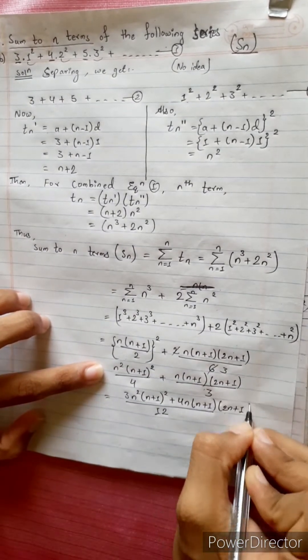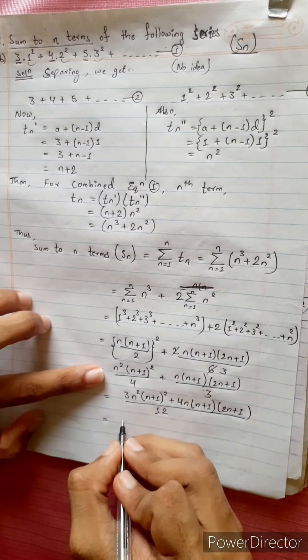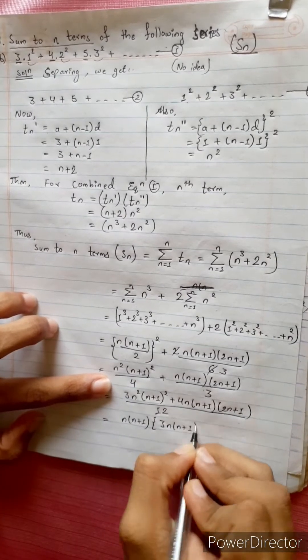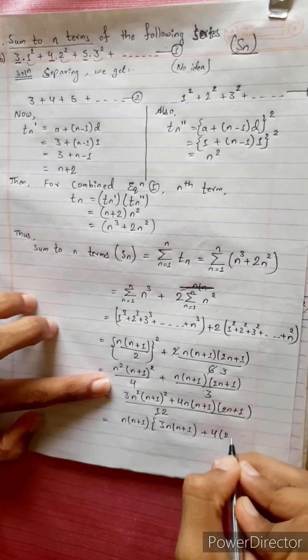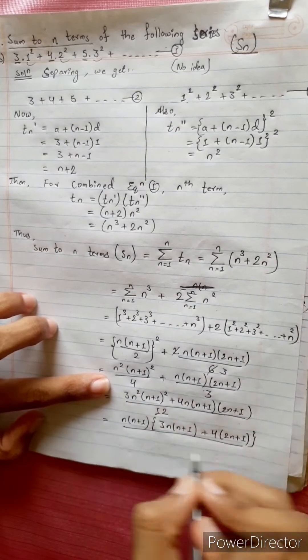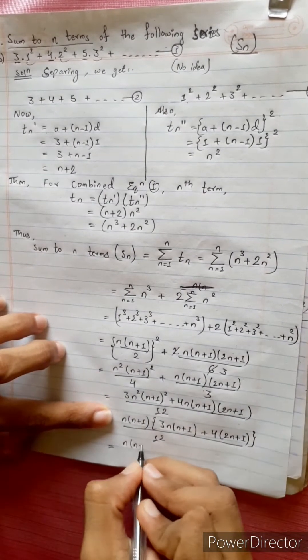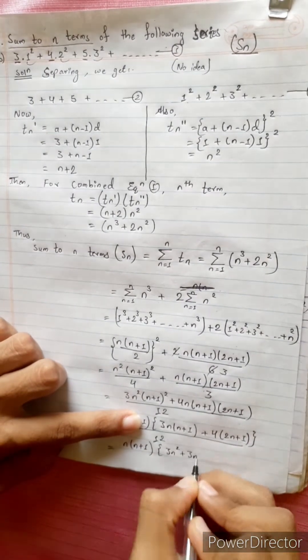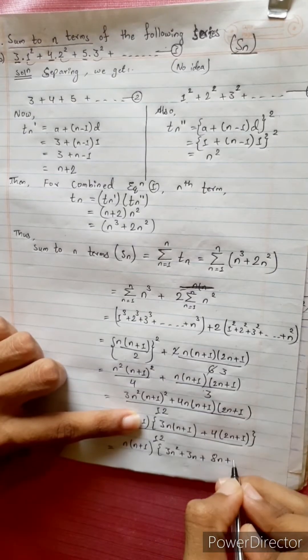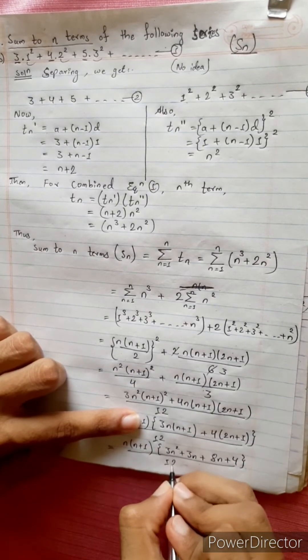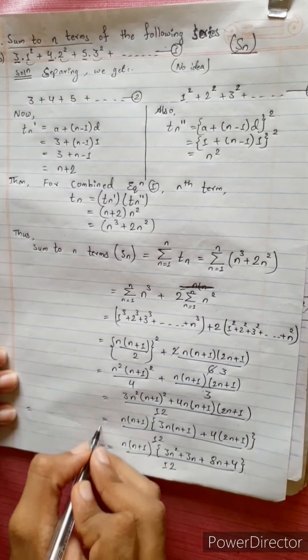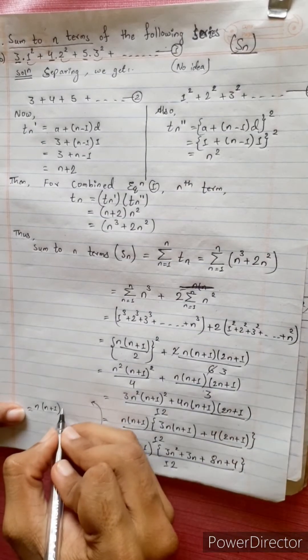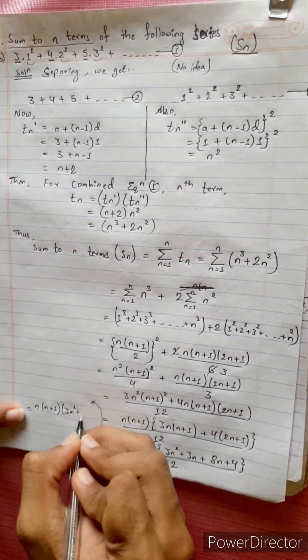Equal to n times n plus 1 common. n times n plus 1 common, remaining term 3n times n plus 1 plus 4 times 2n plus 1. Equal to n times n plus 1 divided by 12 times 3n square plus 3n plus 8n plus 4.